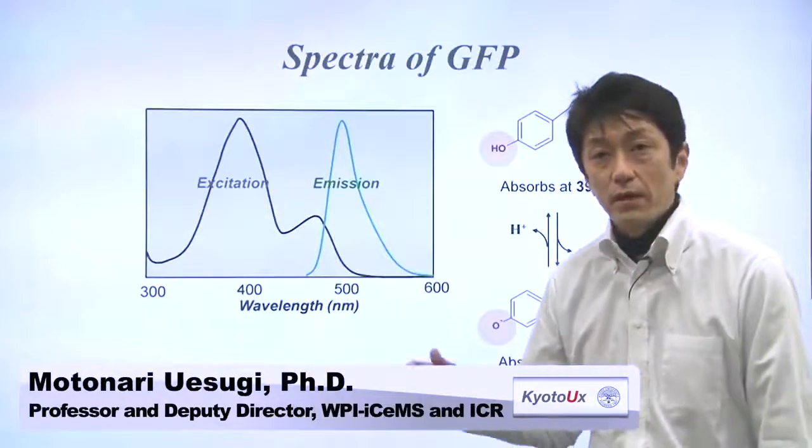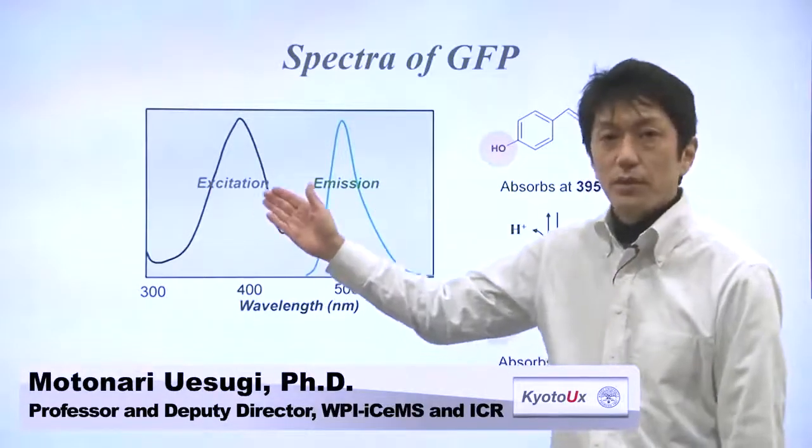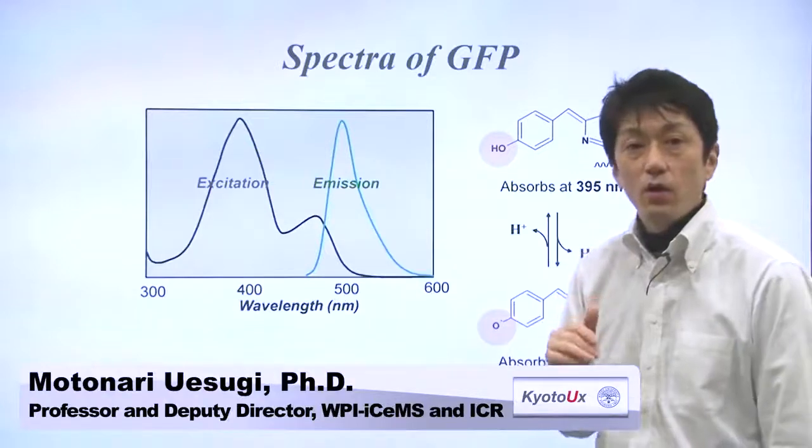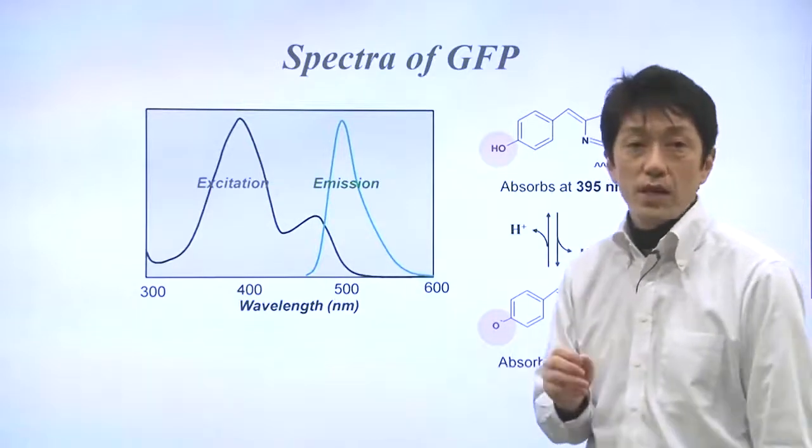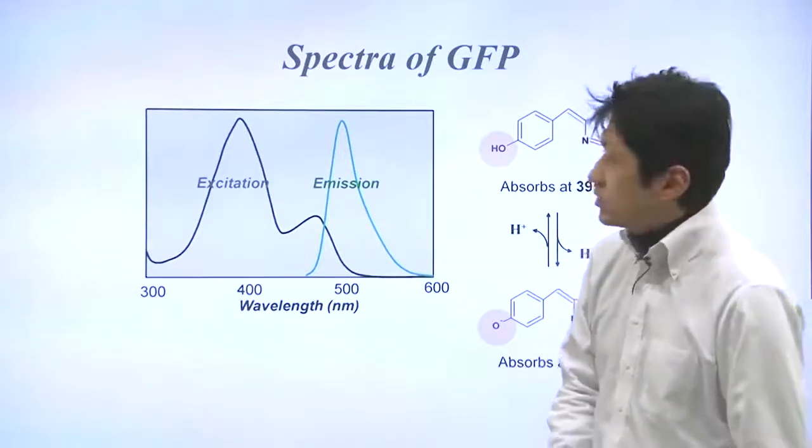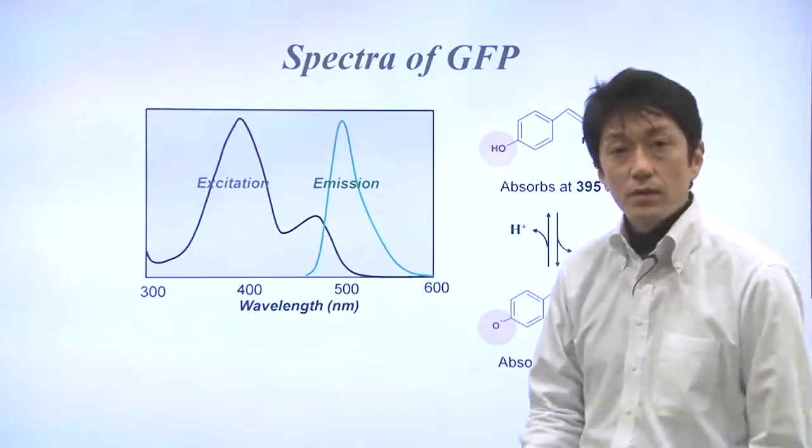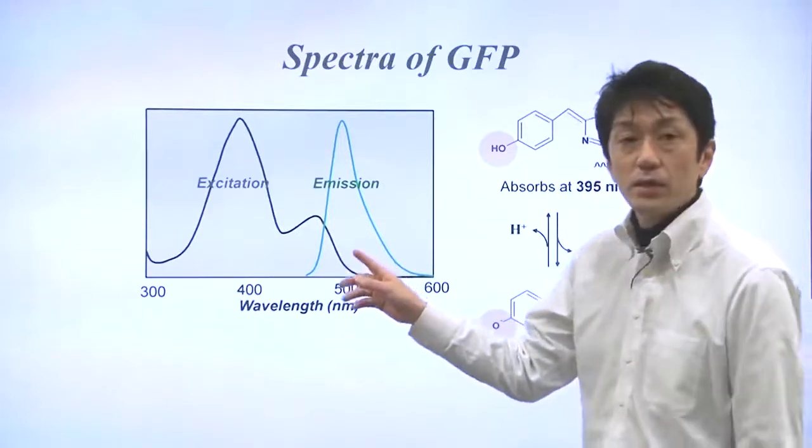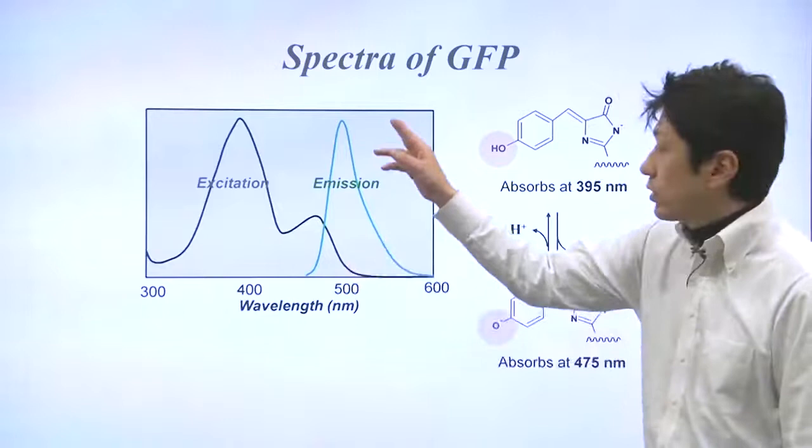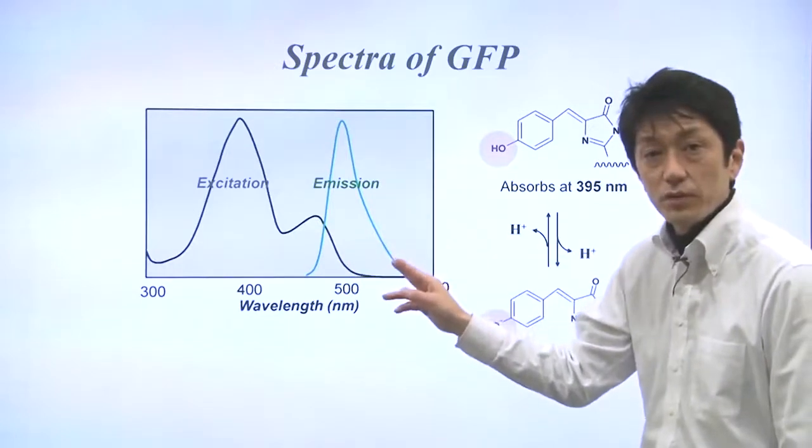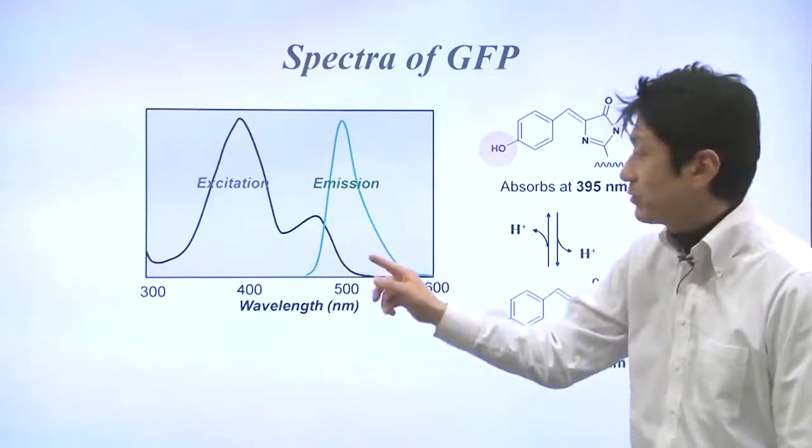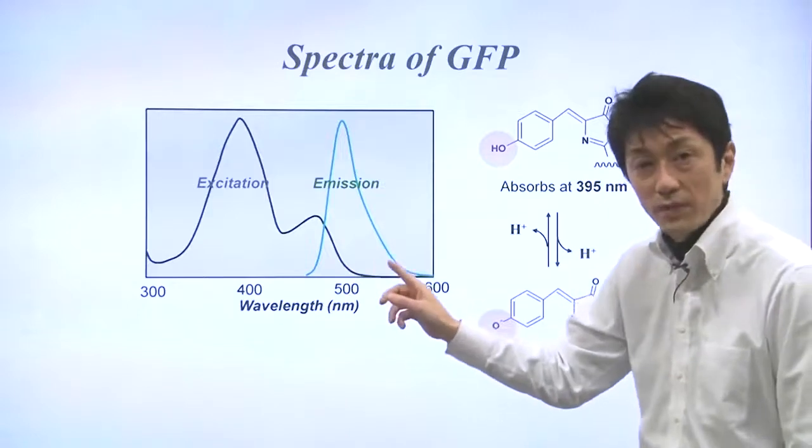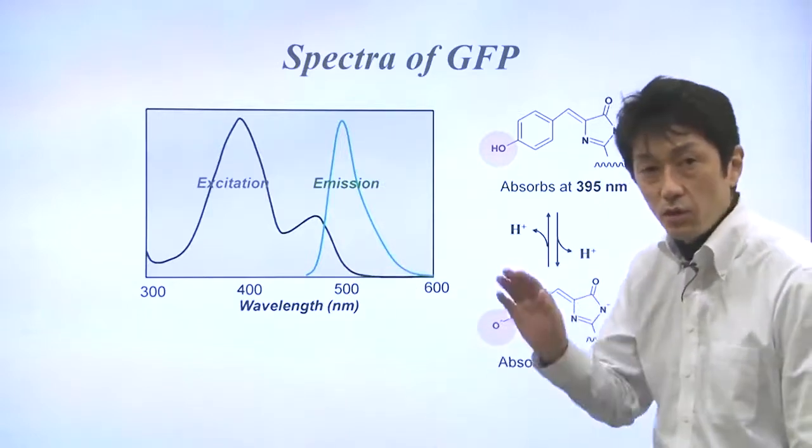What you can see here are excitation and emission spectra of natural or wild-type GFP. GFP has a single peak for fluorescence emission, emitting a green light at 505 nanometers.